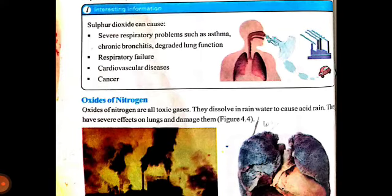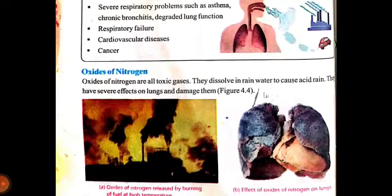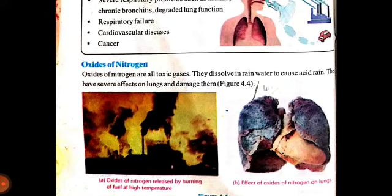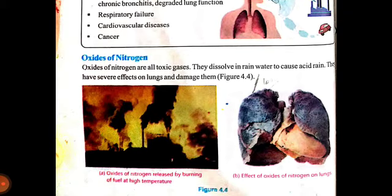Oxides of nitrogen - dusra pollutant hai jo nitrogen ke oxides hain. Oxides of nitrogen are all toxic gases - yeh bohot zyada zahrily gases hoti hain. They dissolve in water to cause acid rain, just like sulfur dioxide. They have severe effects on lungs and damage them. Diagrams mein diya gaya hai ki oxides of nitrogen are released by burning at high temperature, aur saans lene ke zariye jab hamare andar jate hain to hamare lungs is tarah se damage hote hain.